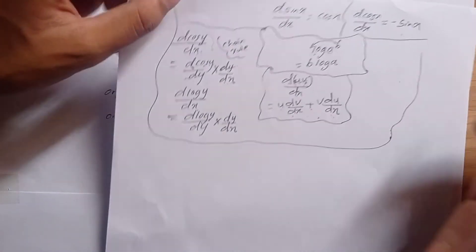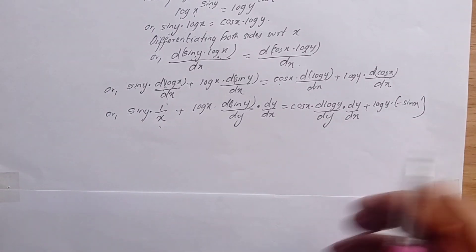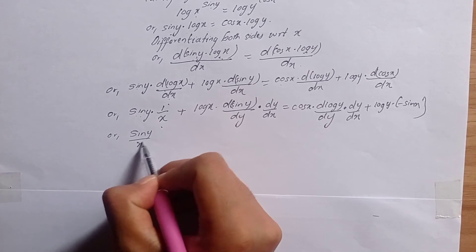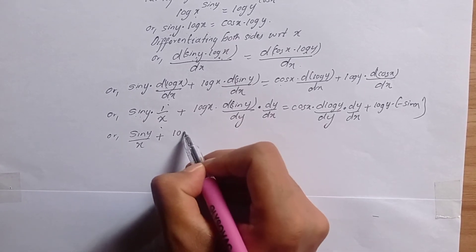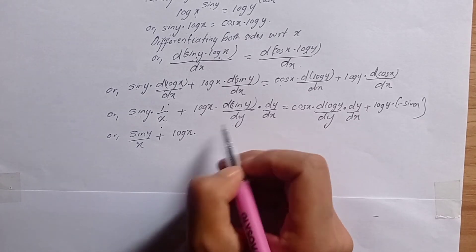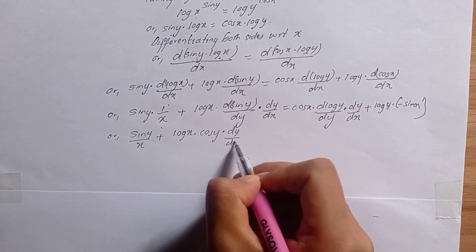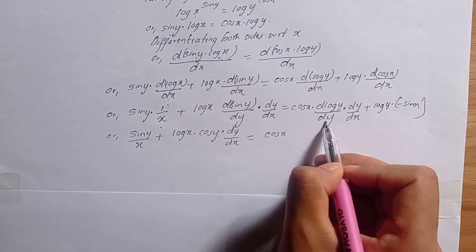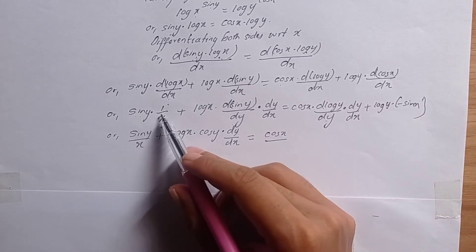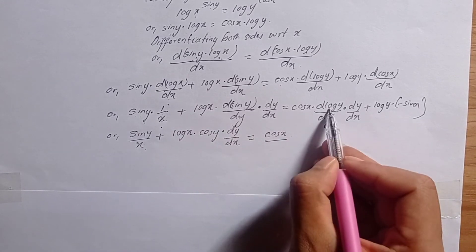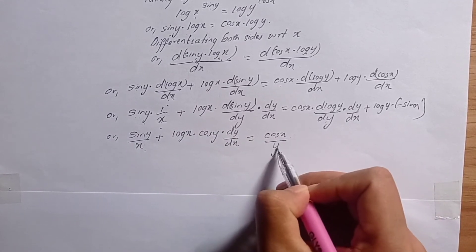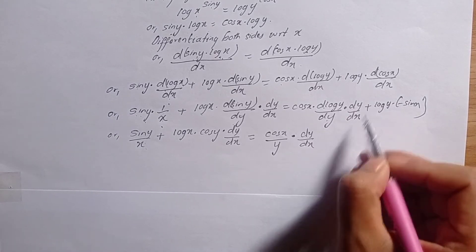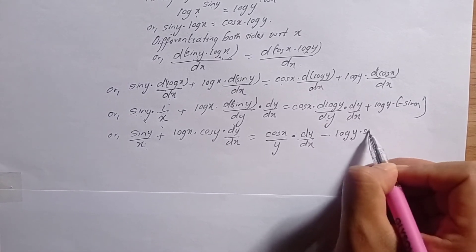So we have: sin y/x plus log x times cos y times dy/dx equals cos x/y times dy/dx minus log y times sin x. Now we need to collect all the dy/dx terms on one side to find dy/dx.